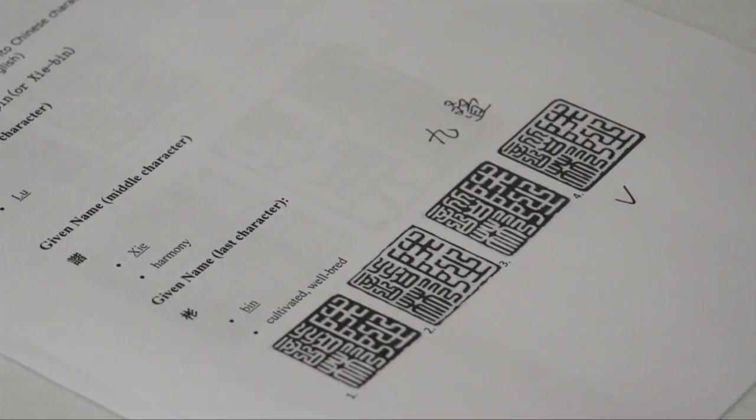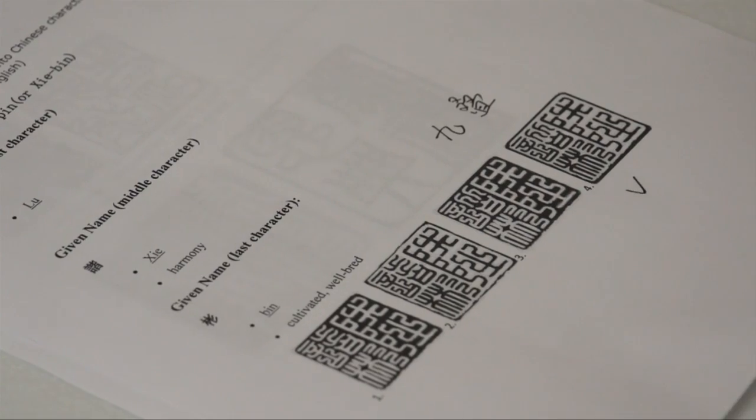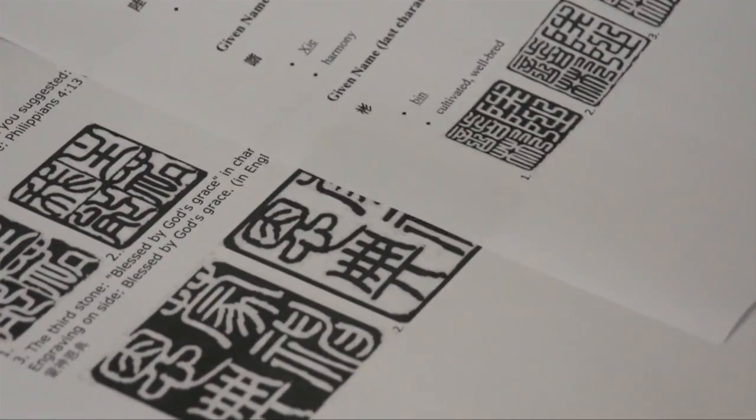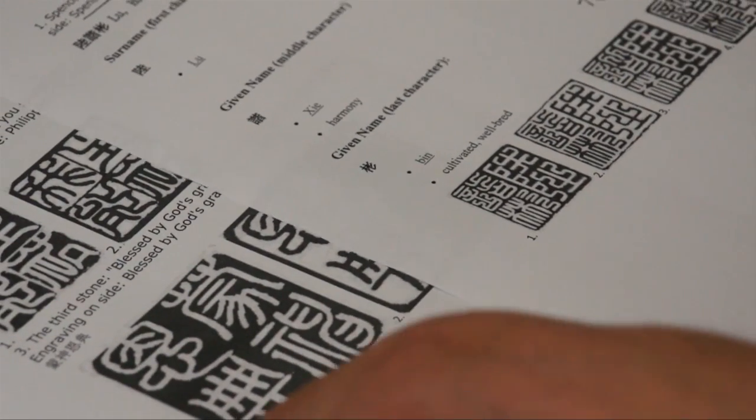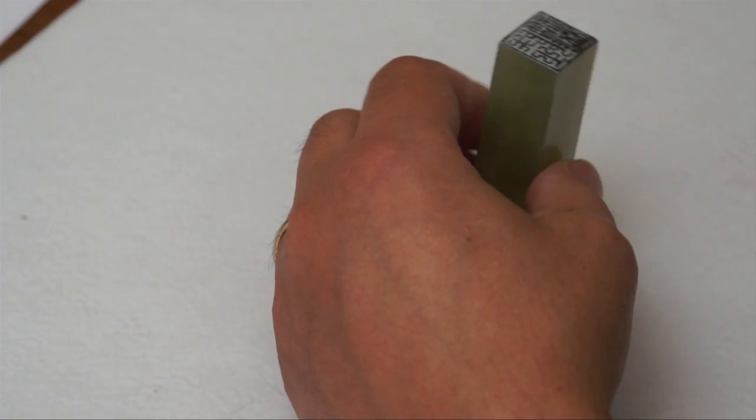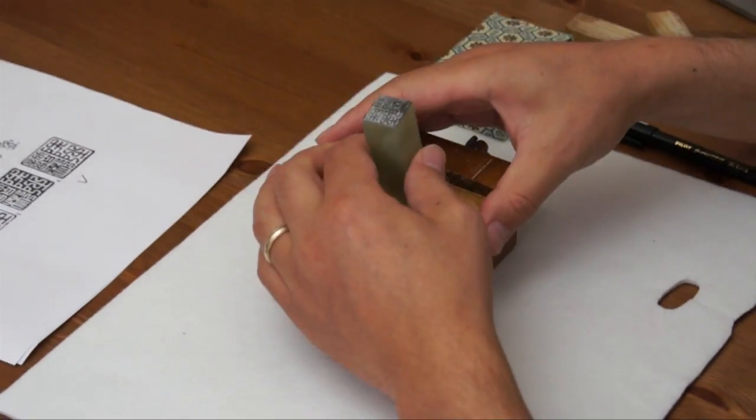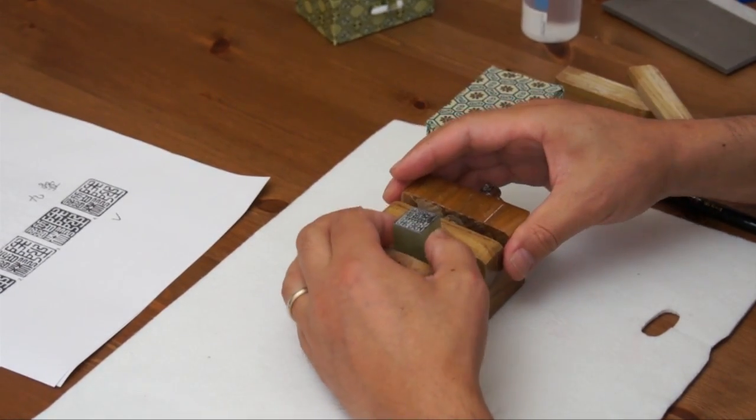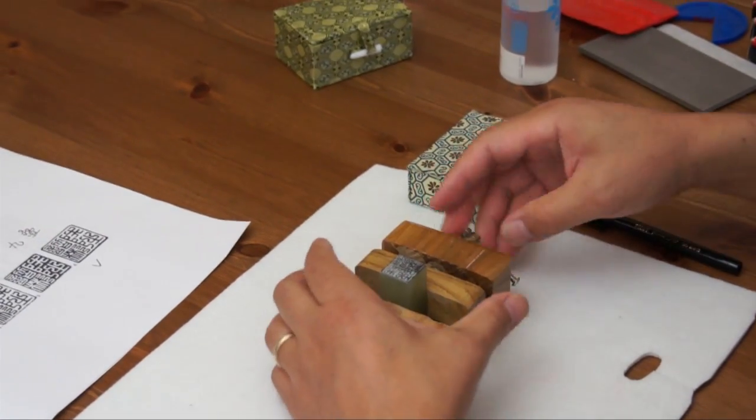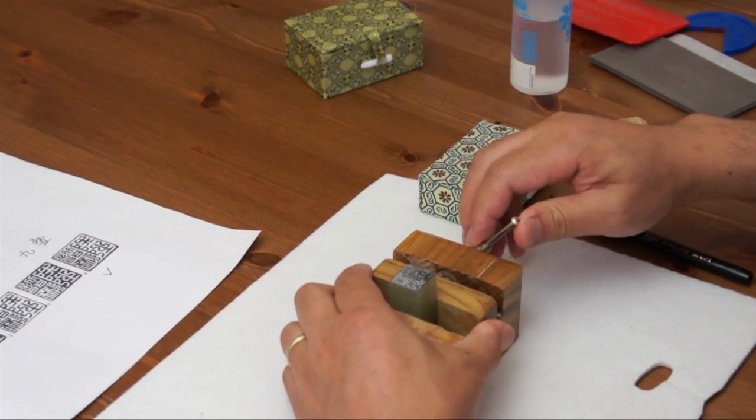By the way, if you order three seals, you get a better carving service discount. So you can order your name seals and mood seals together. The carving actually is less than an hour, but the design takes most of the time. I cannot show you the design until you place your order. Please understand the process.